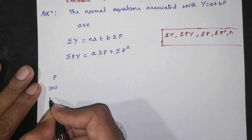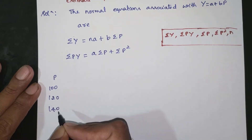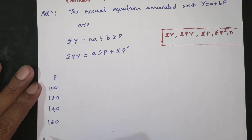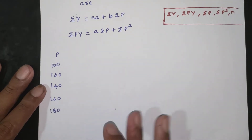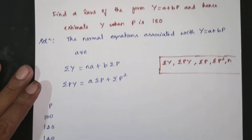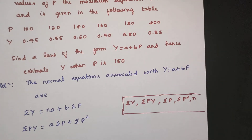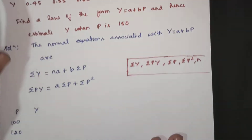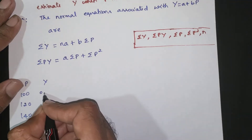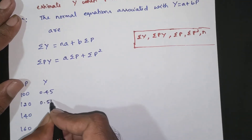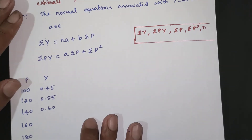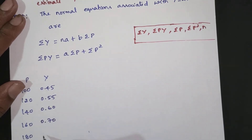The P values are: 100, 120, 140, 160, 180, 200. The corresponding Y values are: 0.45, 0.55, 0.60, 0.70, 0.80, 0.85.